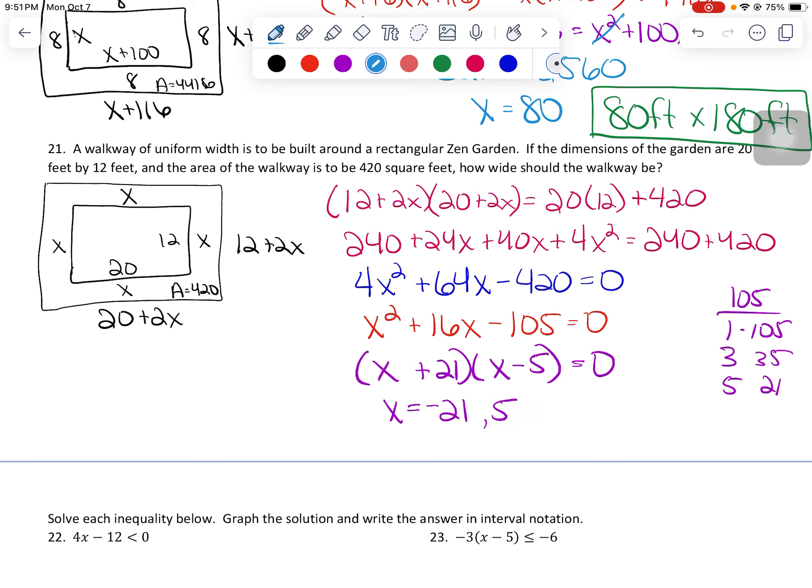How wide should the walkway be? That walkway should be not negative 21, but how about a positive 5 feet? All right, so that takes care of problem number 21, which is the end of page 4. And hopefully, you got some understanding of how to do those four word problems.